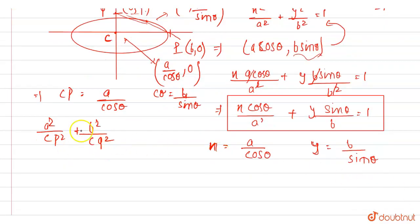So putting this. So A square by, A square by A by cos theta square plus B square over B square over sin theta square. So this B be gone. This B be gone.